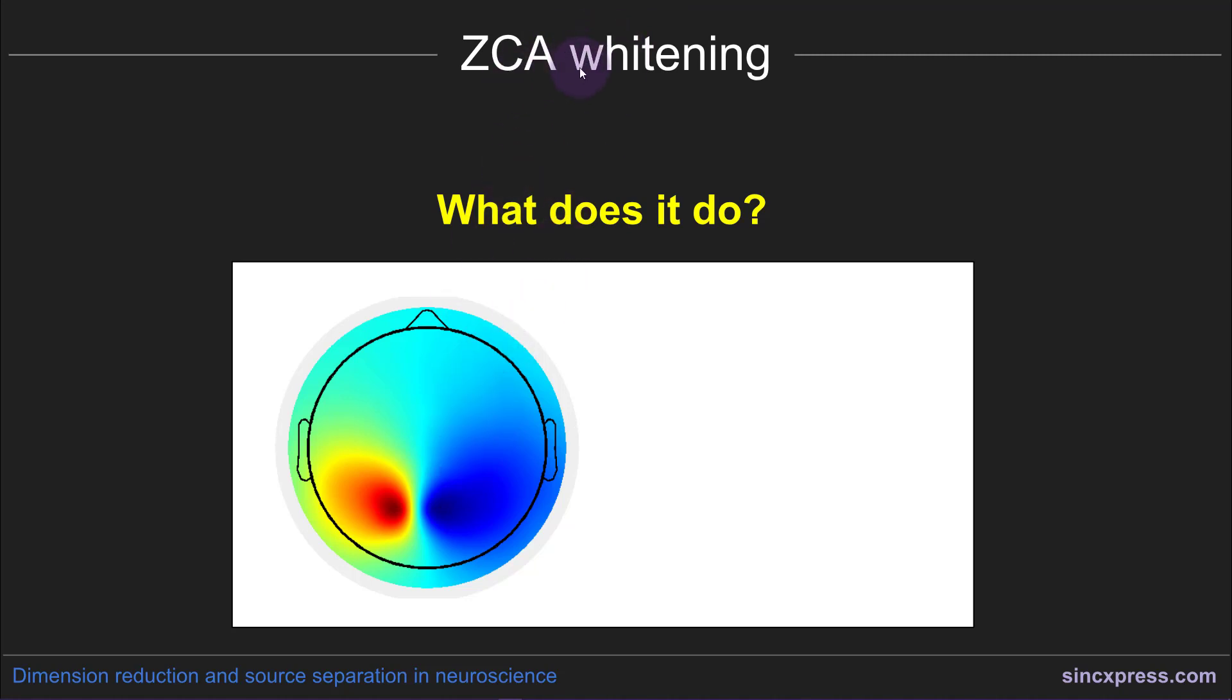and then did generalized eigen decomposition. And now you can see the map again. So it's much more localized. A lot of the high spatial frequency information has been suppressed, and now we get to focus on this more local activity. So I hope this gives you an intuition about the effect of ZCA whitening on the data for source separation.